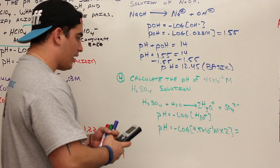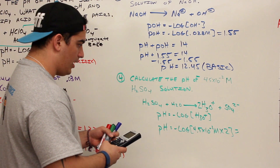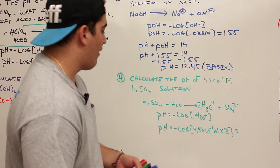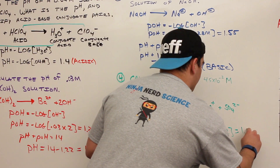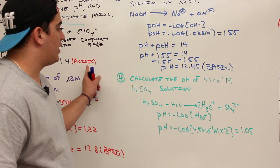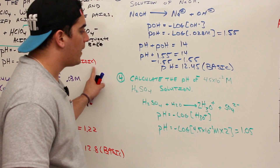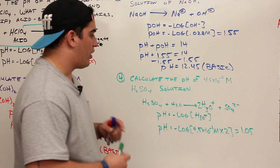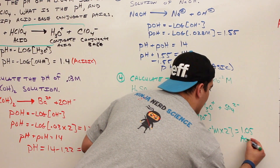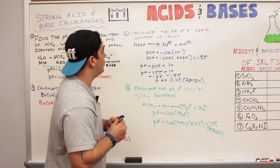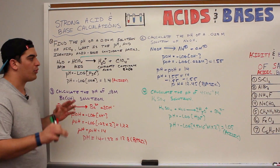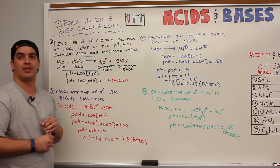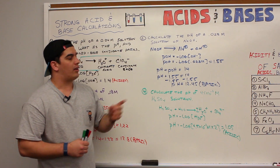Plugging into the calculator: 2 × 4.5 × 10⁻², then taking the negative log, gives us approximately 1.05. That should make sense: comparing to perchloric acid which gave pH 1.4, sulfuric acid gives 1.05, which is more acidic due to the greater deprotonation from H₂SO₄. In this video we covered four examples of strong acid and strong base calculations. We'll get more complex as we move forward. Next video we'll cover the acidity and basicity of salts.